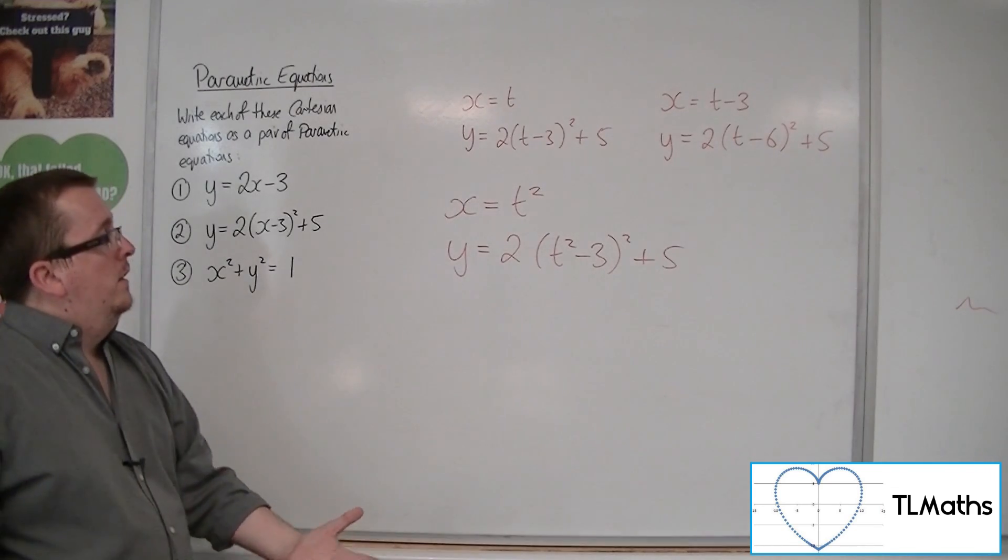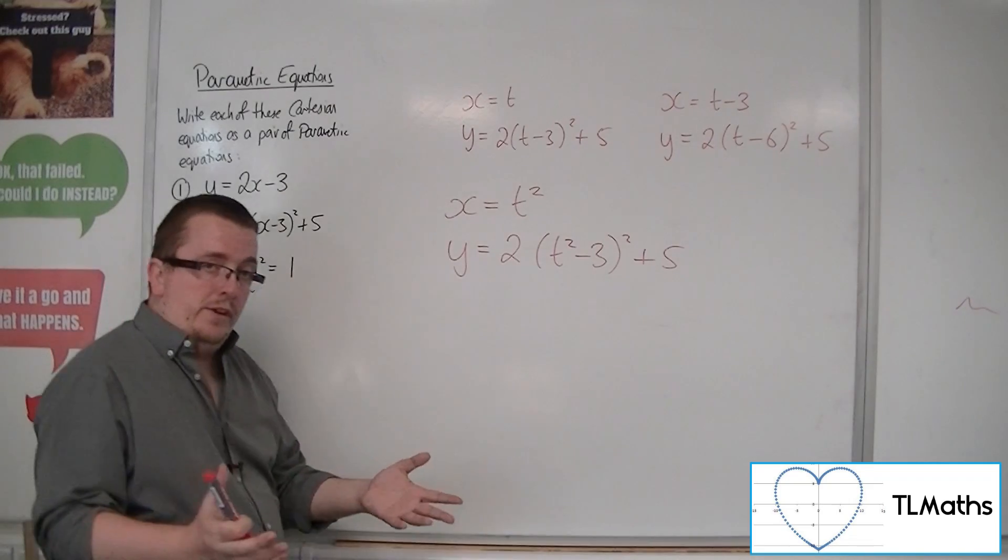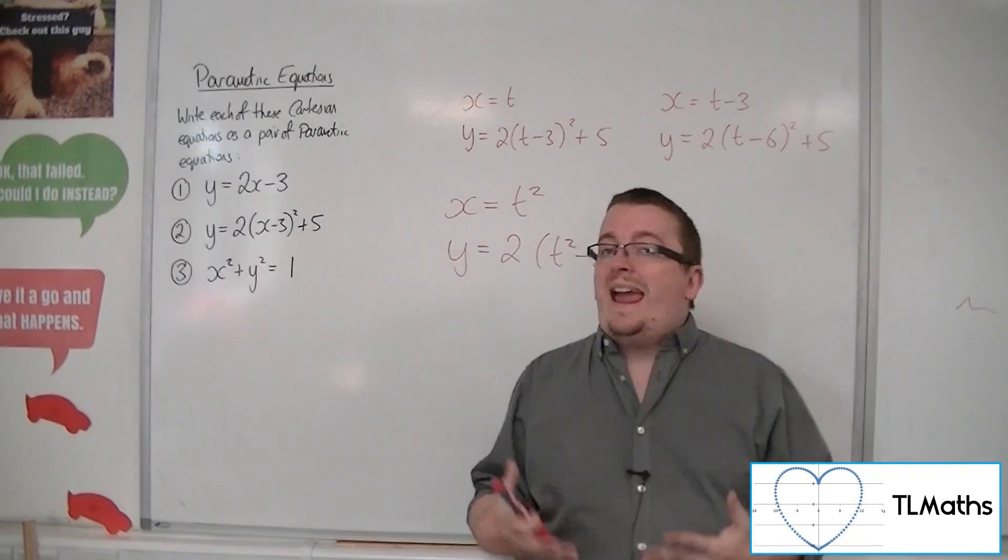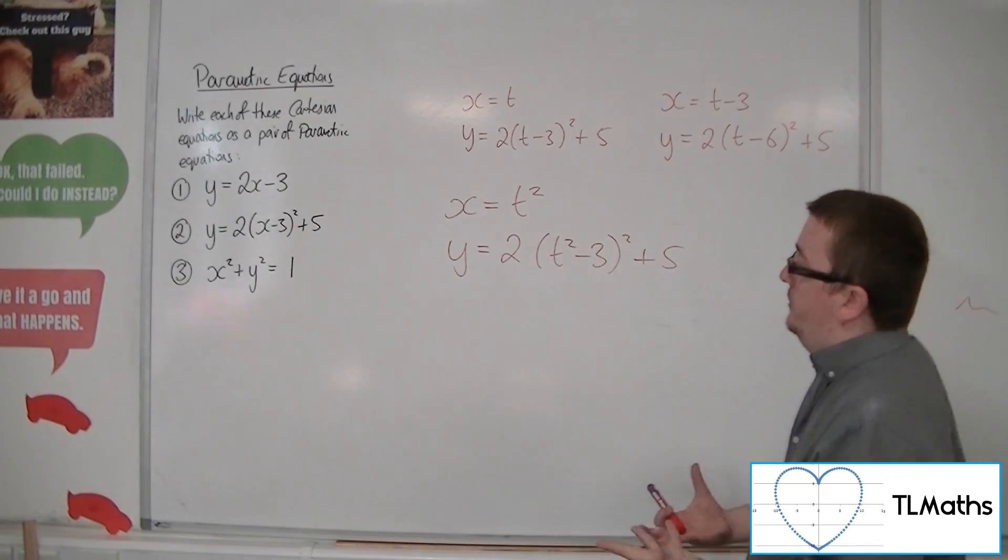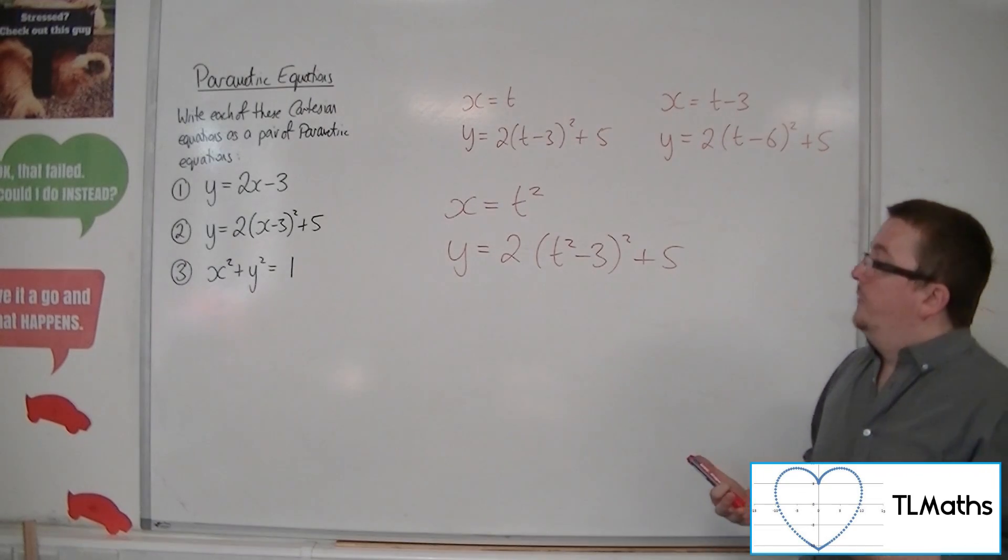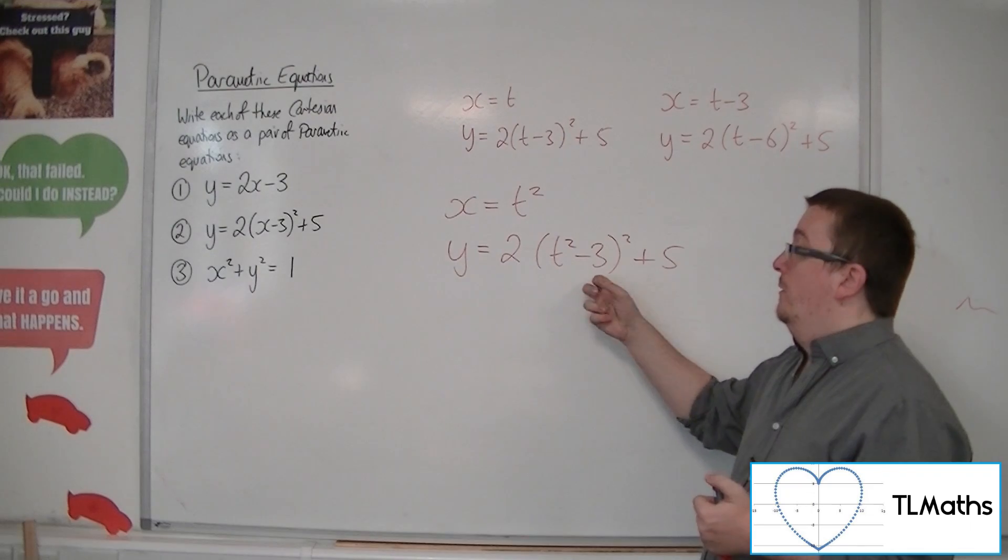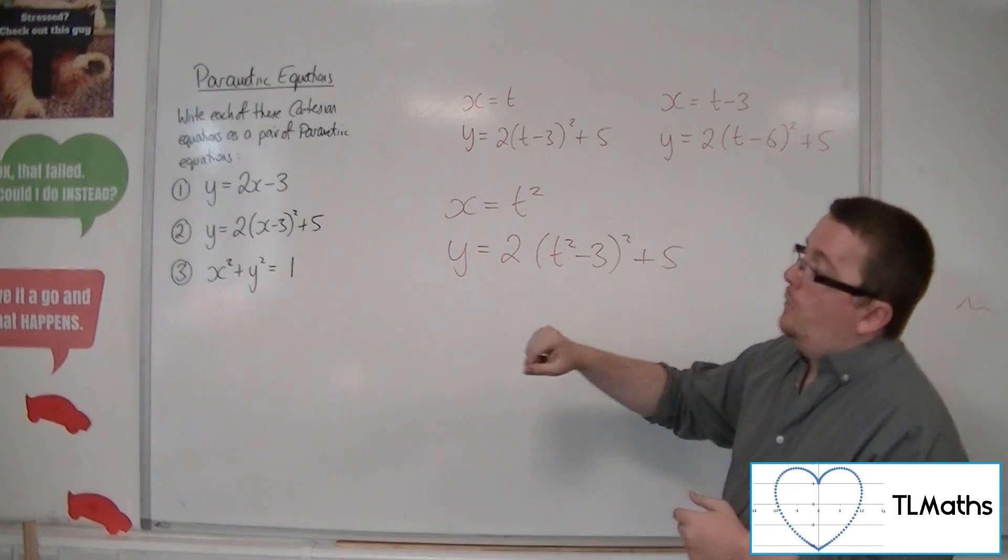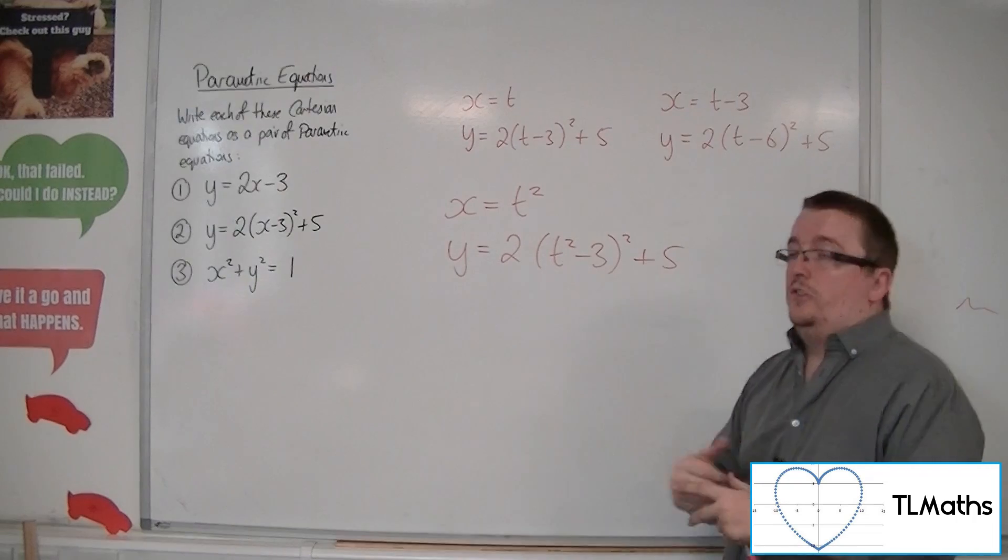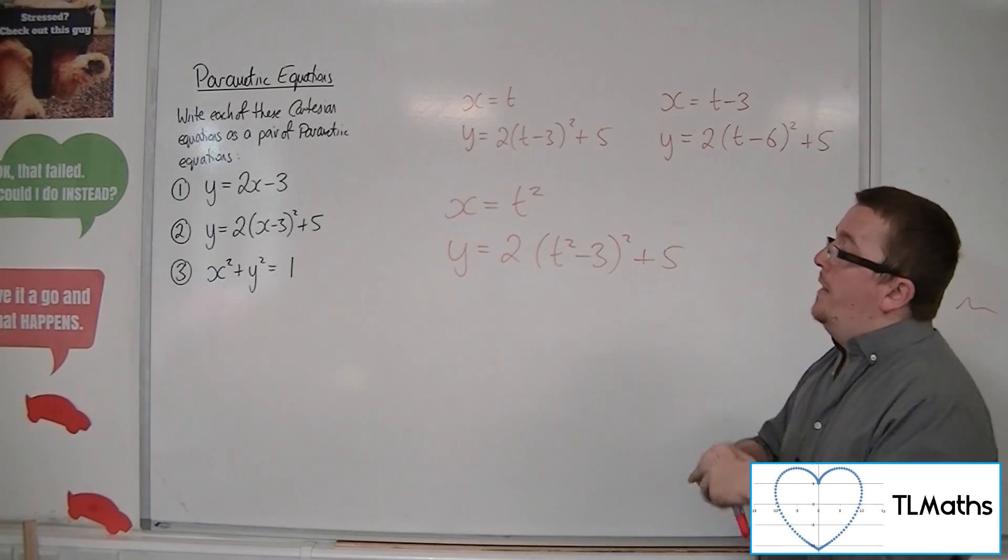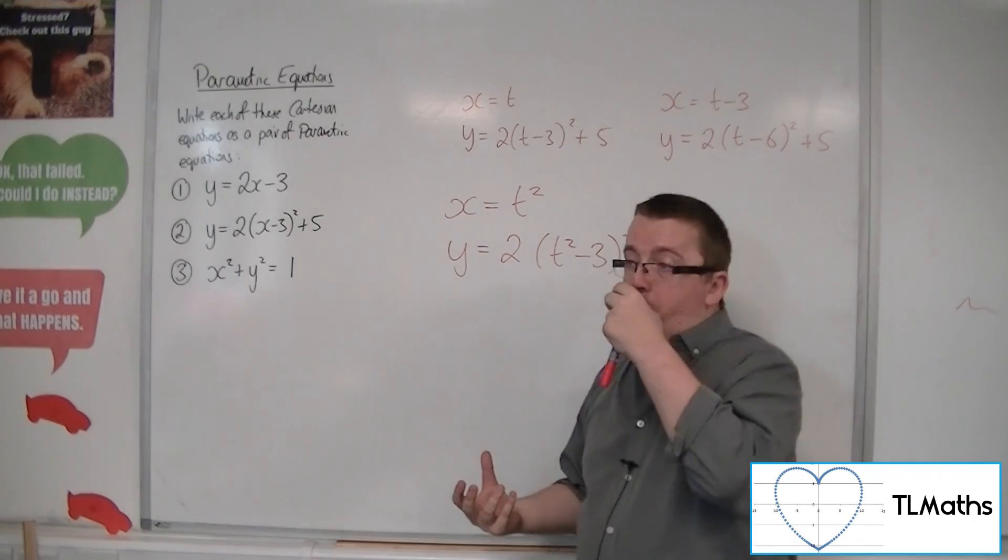Because t could be negative or positive, but when you square it, x cannot be negative now. And that means if x can't be negative over here, well, in the case of y, that wouldn't have been negative anyway. But x can now not be negative. And that might now cause a problem.